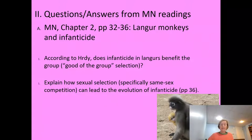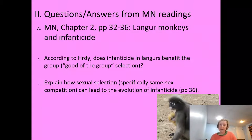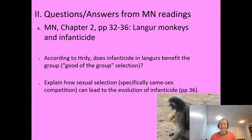A trait like infanticide could help individuals out-compete or out-breed others in the population. Some individuals, because their offspring were killed, would not leave behind any offspring in the next generation. On the other hand, infanticidal males — because they are killing other offspring — are able to reproduce, produce more offspring, and pass along this infanticidal trait to their male offspring. So it's possible that infanticide evolved as an adaptive behavior in males, at least in langur monkeys.